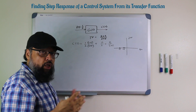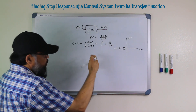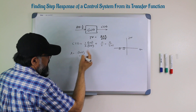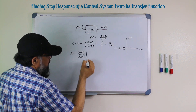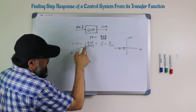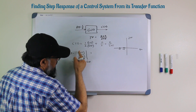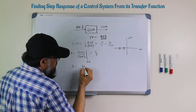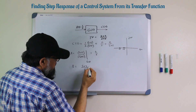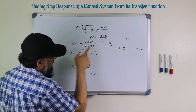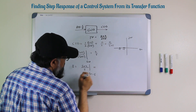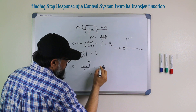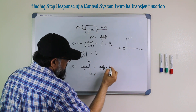You just cover the denominator term with your finger — this is also called the cover-up method. So a is equal to (s plus 2)/(s plus 5) evaluated at s equals zero, ignoring the s term, which gives us a equals 2 divided by 5. Similarly for b, we write (s plus 2)/s evaluated at s equals minus 5, which gives minus 5 plus 2 equals minus 3, divided by minus 5, making b equal to 3 divided by 5.